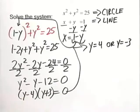Now, at this point, you might think you're done, but remember, we're looking for the ordered pairs where a circle and a line would intersect. So let's go back to y equals 4.